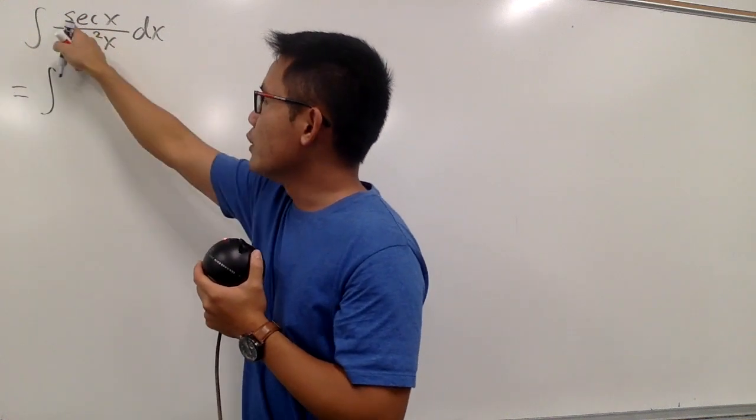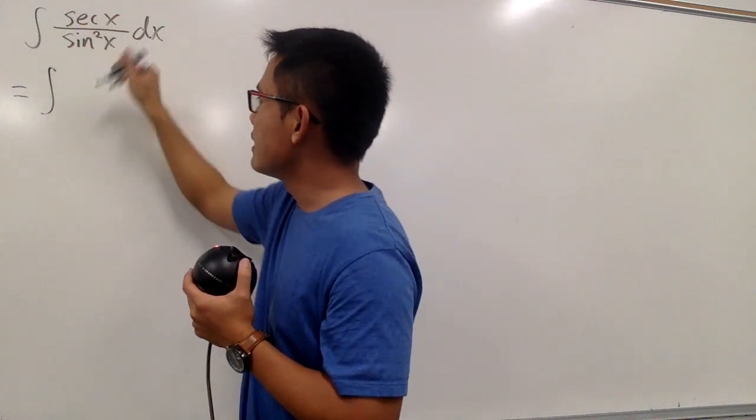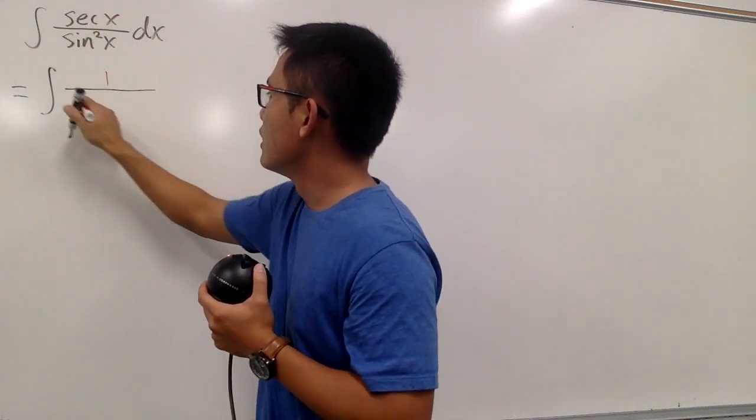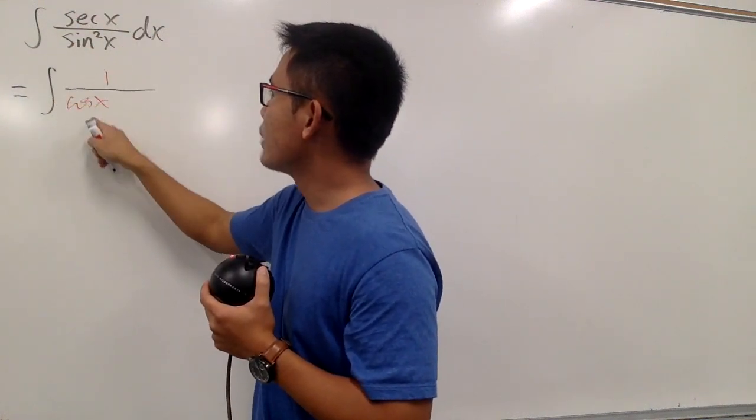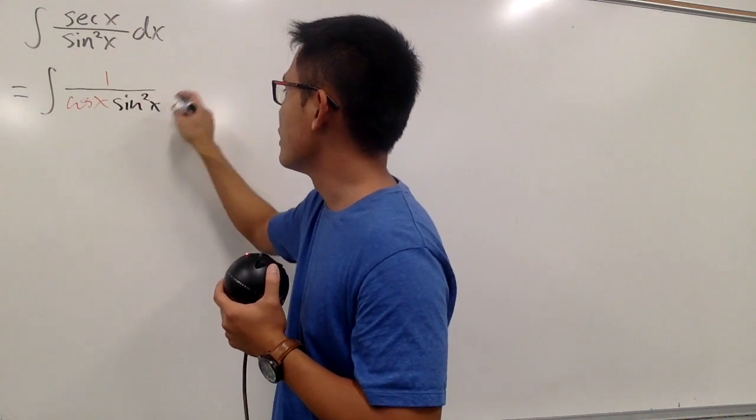Look, this is the integral. We know secant x is the same as 1 over cosine, right? So let me write this down as 1 over cosine x. This right here will be my secant x. And then this is the sine squared x, let me just put that down right here.